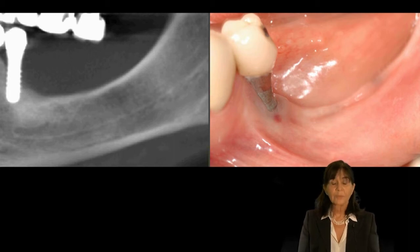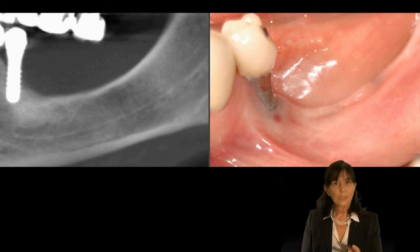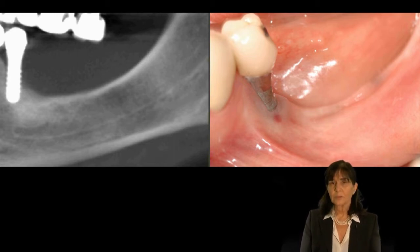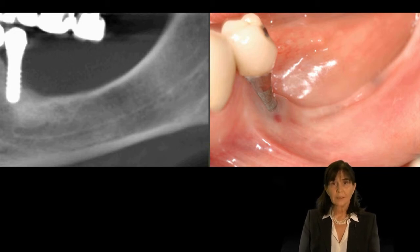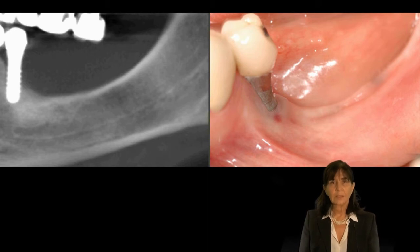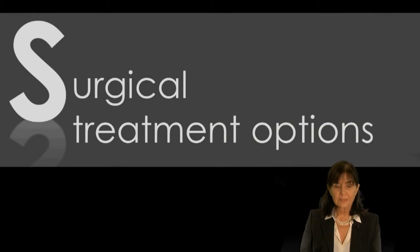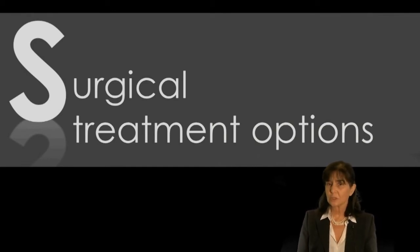Although the mandibular canal is situated about 7 to 8 millimeters inferior to the alveolar crest, the inter-arch relationship is not favorable and the distance is too far. What are the surgical treatment options for such a condition?